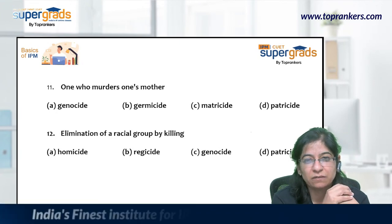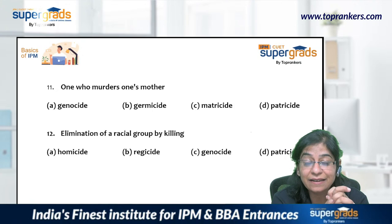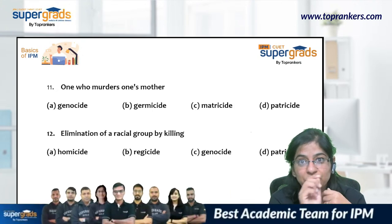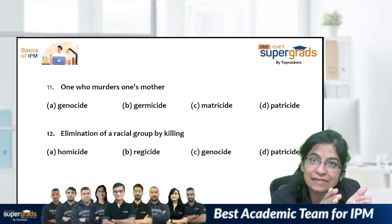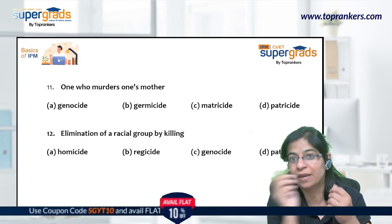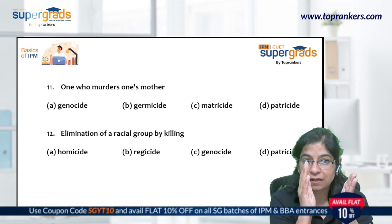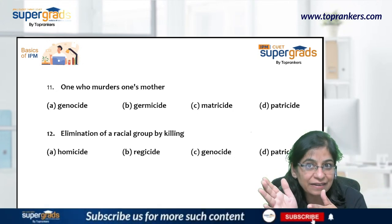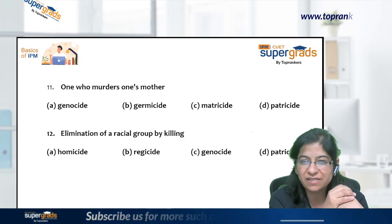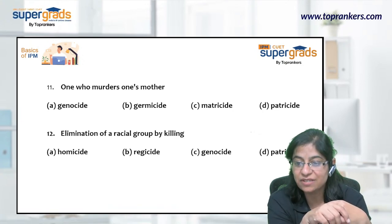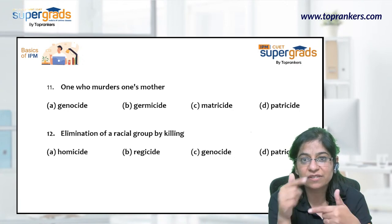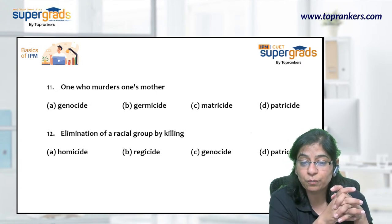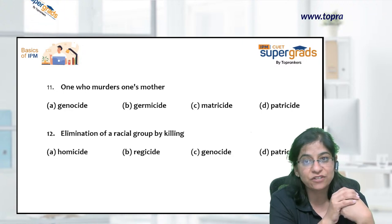Next: 'One who murders one's own mother.' All four options contain 'cide,' meaning killing. Genocide refers to the killing of members of a particular race or community. Germicide means killing germs. Matricide is killing one's mother. Patricide is killing one's father. So the answer to this question is matricide.